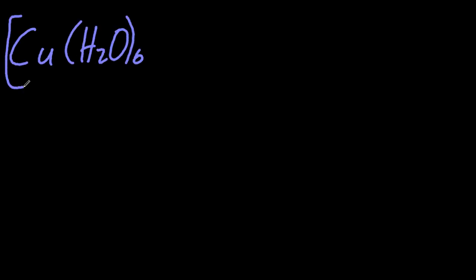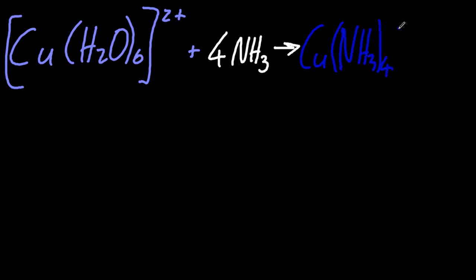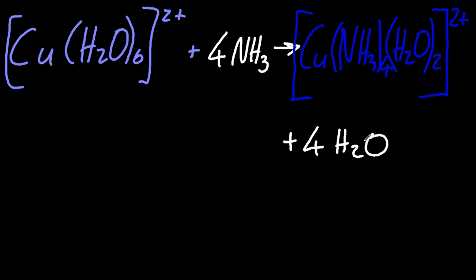Again, the colors represent the colors of the complexes. So four ammonia ligands are replacing four water ligands around the central copper 2 plus ion. Now don't forget the square brackets. If you don't put square brackets to show a complex, then that's wrong. It's not quite that simple, but this is close enough for IB chemistry.